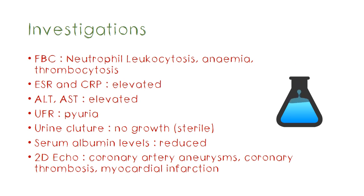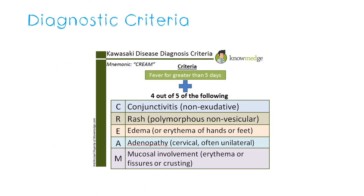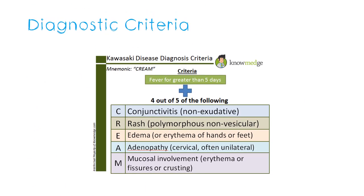This is mainly a clinical diagnosis, and we use a set of clinical criteria to diagnose the disease. The mnemonic we use is CREAM. Essentially, the mandatory criteria we must have is fever for more than five days. The other five criteria are conjunctivitis, non-vesicular rash, edema, lymphadenopathy, and mucosal involvement, of which at least four are needed to come to a diagnosis of Kawasaki disease.